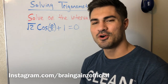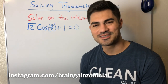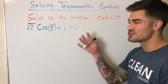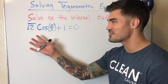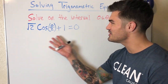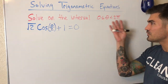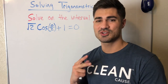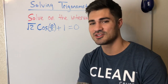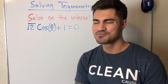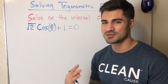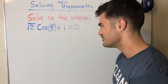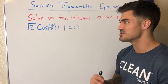Hello everybody, welcome to another video. In this video we're going to continue solving trigonometric equations, working out examples on the interval from 0 to 2π. This is Part 2, so if you want to start from the beginning check out Part 1. Since this is Part 2, we'll do examples that get a little bit more challenging.